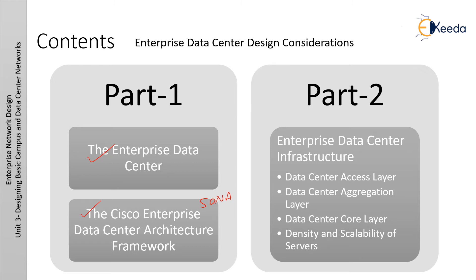Now, in Part 2 of this Enterprise Data Center Design Consultation, Enterprise Data Center Infrastructure includes the Data Center Access Layer, Data Center Aggregation Layer, Data Center Core Layer, and Density and Scalability Server. So let us discuss each and everything in detail.